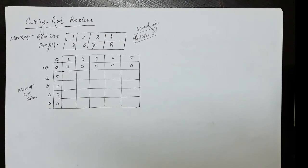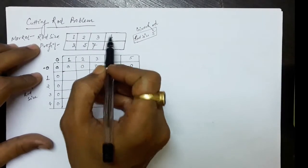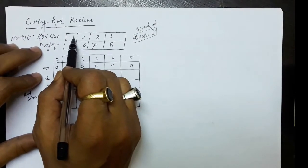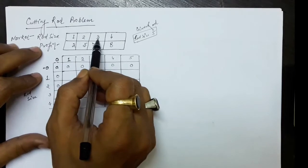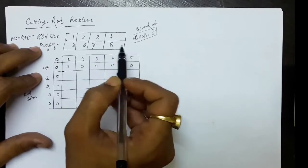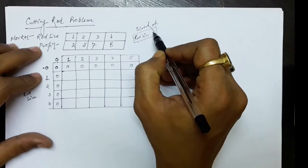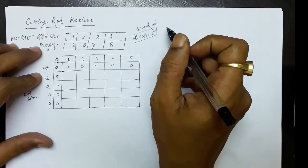The cutting rod problem is: given a rod, cut it into various pieces to earn maximum profit. The rod sizes available are 1, 2, 3, and 4. The profits are: 1-inch gives profit 2, 2-inch gives profit 5, 3-inch gives profit 7, and 4-inch gives profit 8. The problem is that we have been given a rod of size 5 and we must cut it into various pieces to earn maximum profit.